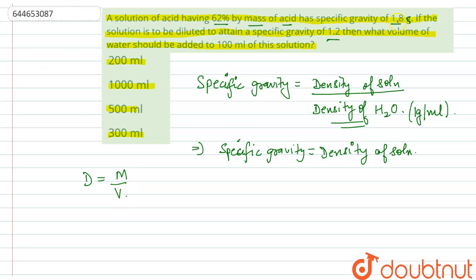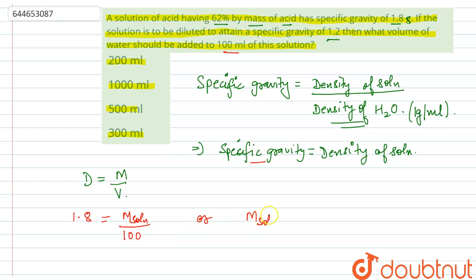It is given that the specific gravity is 1.8, so the density of the solution is 1.8. Using density equals mass upon volume, and the initial volume is 100 ml, the mass of the solution is 1.8 × 100 = 180 grams.